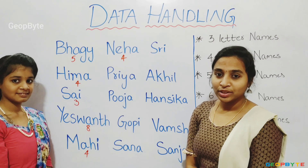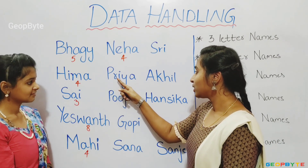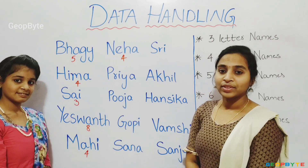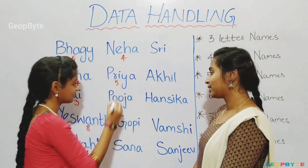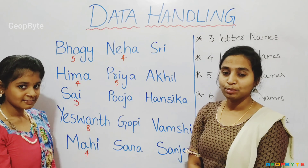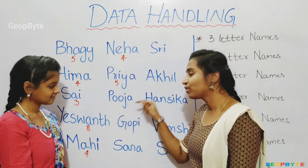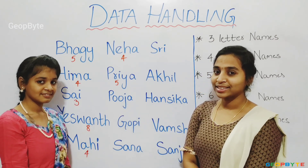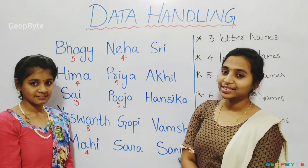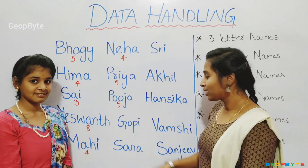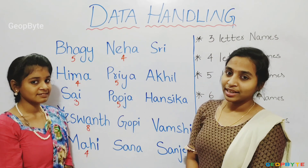Let us count how many letters in the name Priya. One, two, three, four, five. There are five letters in the name Priya. Let us count how many letters in the name Pooja. One, two, three, four, five. There are five letters in the name Pooja. Let us count how many letters in the name Gopi. One, two, three, four. There are four letters in the name Gopi.